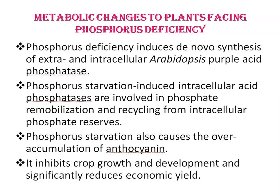Next is metabolic changes in plants facing phosphorous deficiency. Plants undergo a series of metabolic changes to maintain cytoplasmic phosphate concentration and intracellular ATP and nucleotide levels upon phosphorous starvation. Among these adaptations, phosphorous deficiency induces de novo synthesis of extra- and intracellular purple acid phosphatase. Phosphorous starvation-induced intracellular acid phosphatases are involved in phosphate remobilization and recycling from intracellular phosphate reserves. Phosphorous starvation also causes over-accumulation of anthocyanin, which inhibits crop growth and development and significantly reduces economic yield.